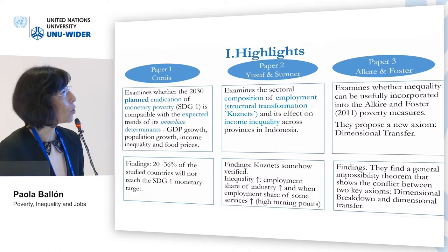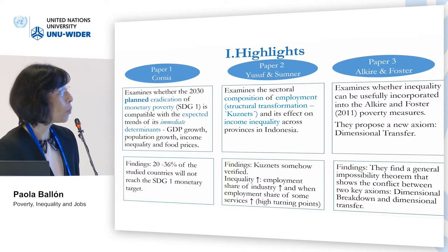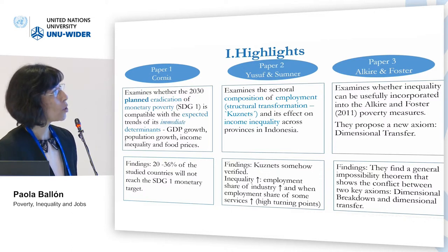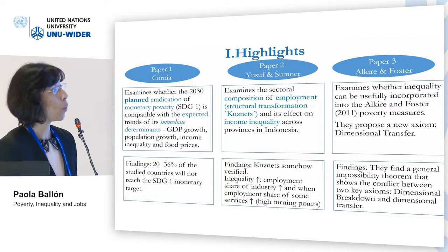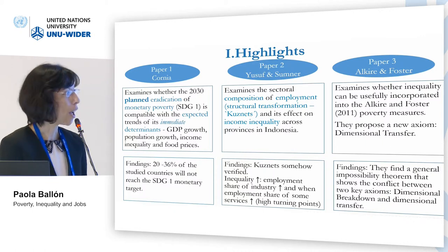The second paper by Yusuf and Sumner examines the sectoral composition of employment, thinking about the Kuznets argument and its effects on income inequality across provinces in Indonesia. The findings tell us that Kuznets is somehow verified — that inequality increases with the employment share of industry and also with the employment share of some services, with high turning points. The third paper by Sabine Alkair and James Foster examines whether inequality can be usefully incorporated into the Alkair-Foster 2011 poverty measures. They propose a new axiom — a dimensional transfer one — and find a general impossibility theorem showing the conflict between the two axioms, but also propose a way forward for reporting both subgroup decomposition and inequality.